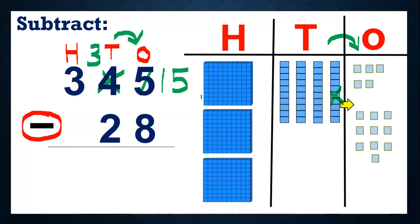Let's start subtraction. So we will remove eight from fifteen. Let's cut eight blocks — one, two, three, four, five, six, seven, eight. So when we remove eight blocks, how many are left? One, two, three, four, five, six, seven. So seven ones are left. So I will write seven under ones.